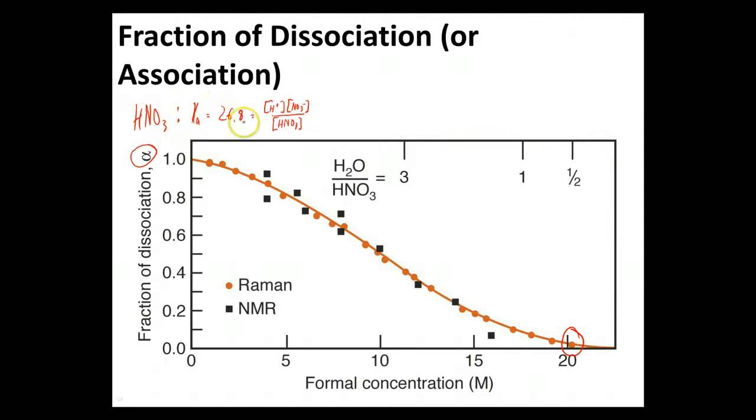So HNO3, its Ka value is very large. We're used to seeing these being fractions rather than whole numbers, let alone fairly big whole numbers, right? So 26.8.